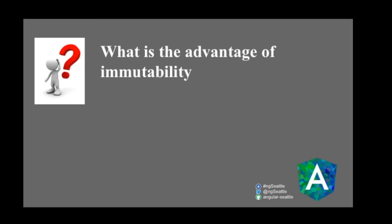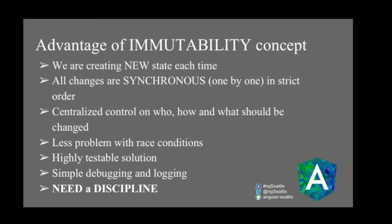Why do we care about immutable state? Immutability means you always have a history — you never modify the existing state, you create a new one. All changes are synchronous, meaning there's one strict order to update data. We always know who, when, and how data was updated, which reduces race conditions. It's highly testable and isolated. Once tested, it's already efficient and easy to debug. The trade-off is it requires development discipline: you must follow the pattern and the rules.